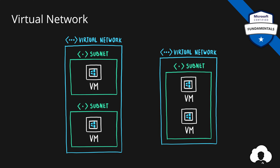If you want to connect multiple virtual networks, you can do one of two things. You can either use a feature called VNet Peering, which allows you to combine virtual networks together and allow them to act as one. Or you can use VPN Gateway to do so. For now, just remember you have two options: VNet Peering and VPN Gateway.